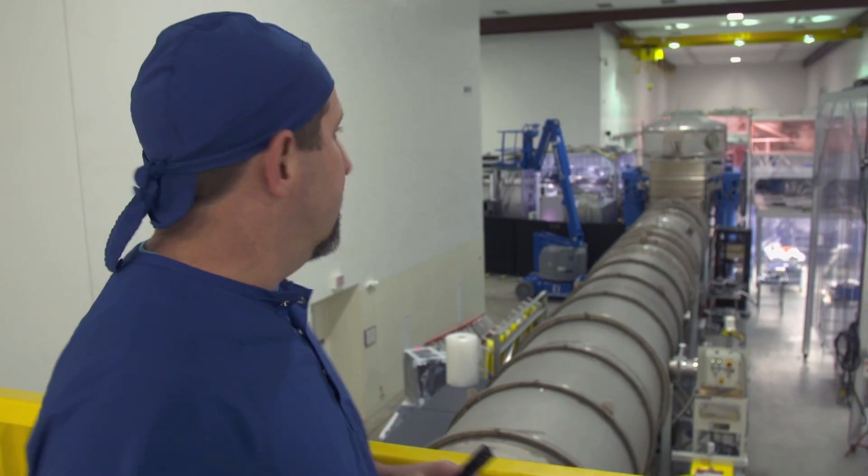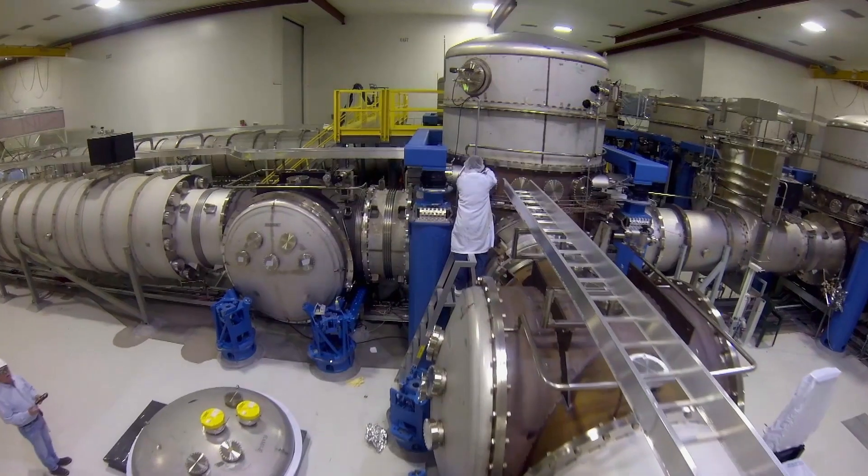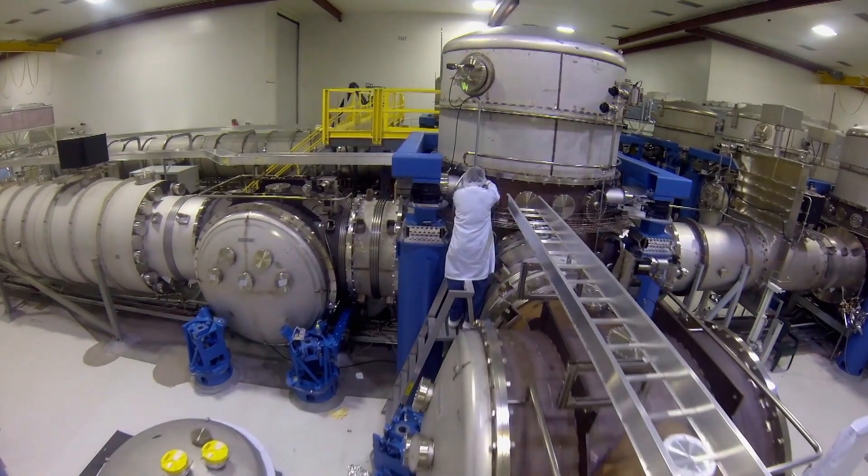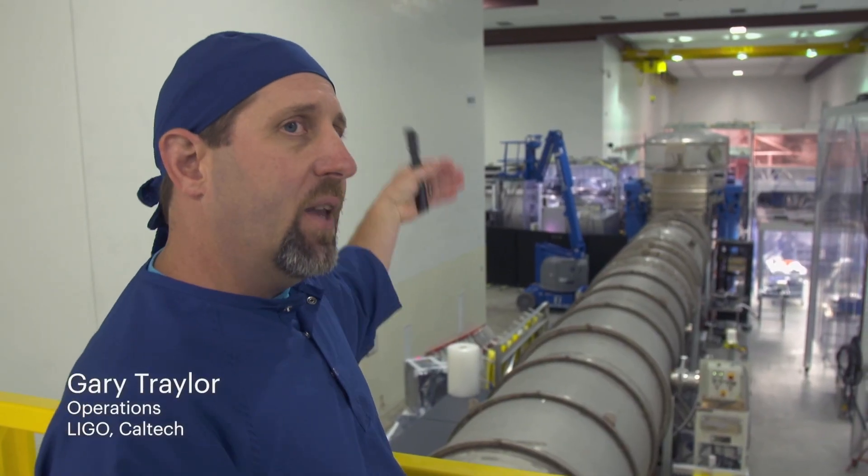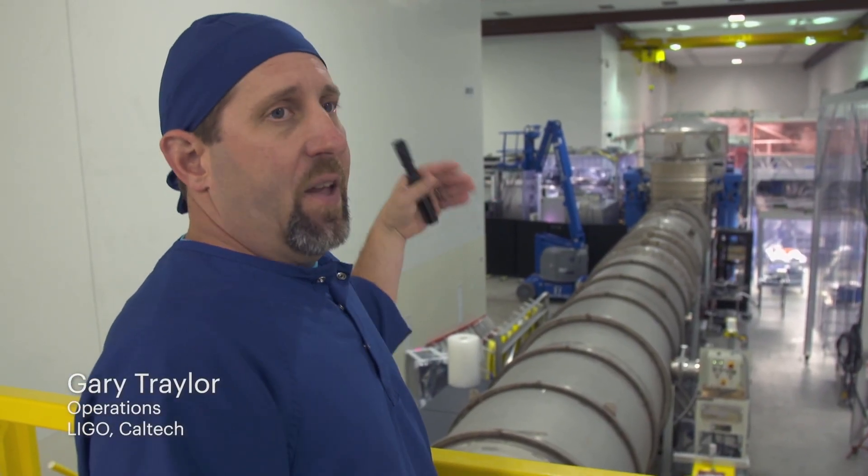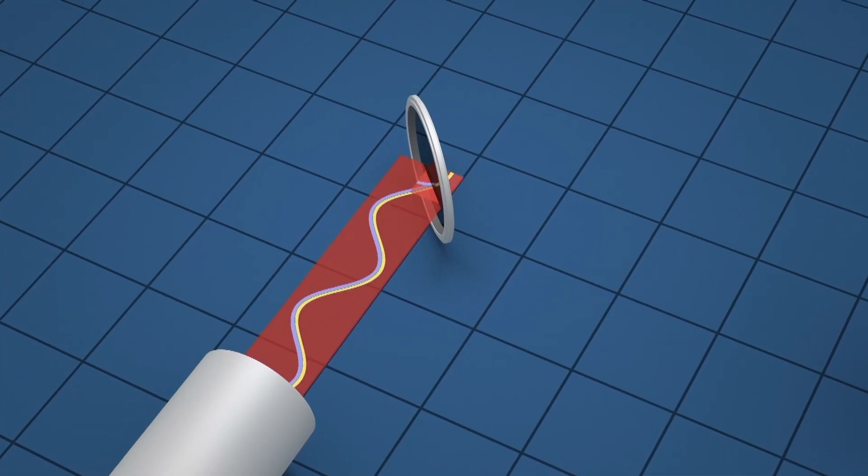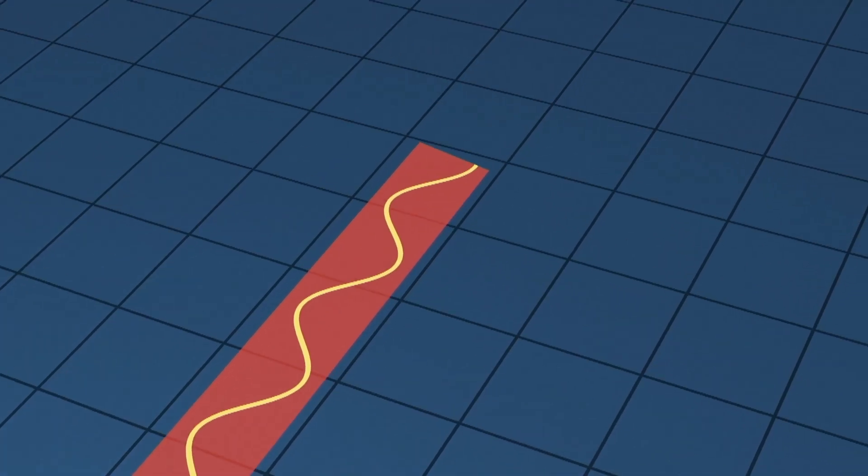This is actually the vertex, this is the heart of the interferometer here. This is where the two arms join. There's a test mass in there and directly behind that is what we call a beam splitter. And that's where the laser is split into two arms and travels to the end stations, bounces off the mirrors and comes back.